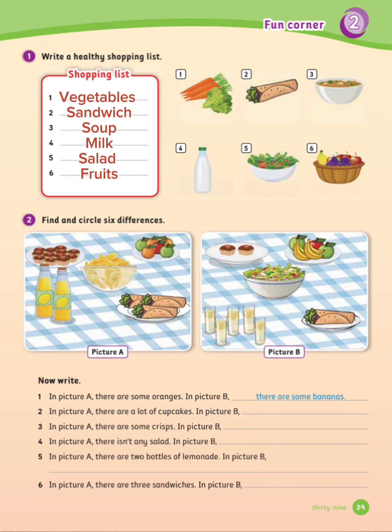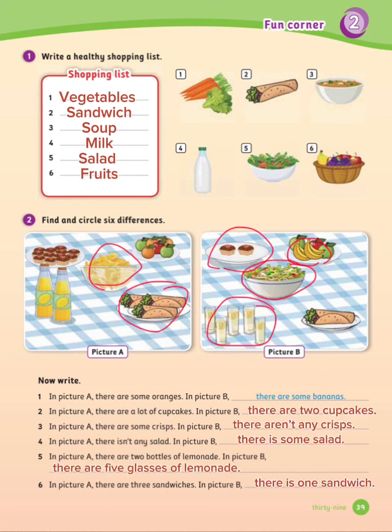Let's see the answers. Here are the six differences. Now let's write the differences. Number 1: In picture A, there are some oranges. In picture B, there are some bananas.